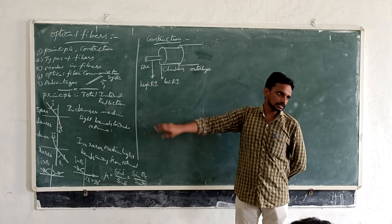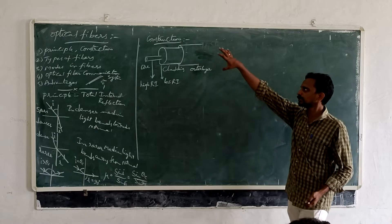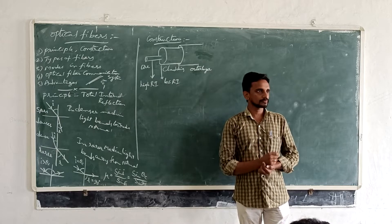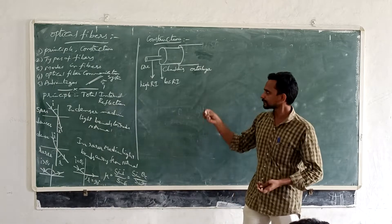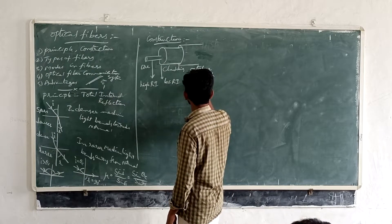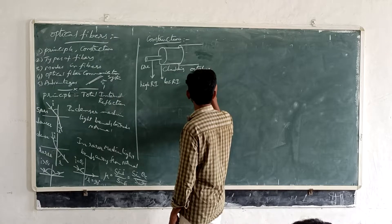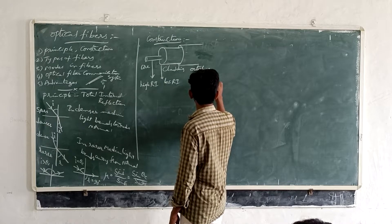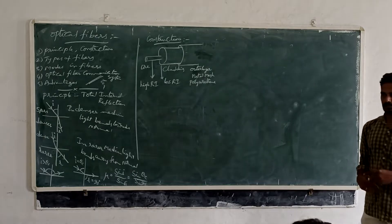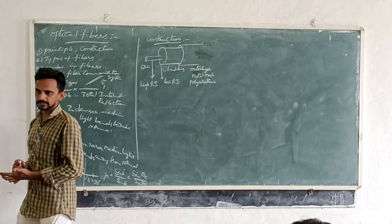We have a high-refractive-index material as the core. Then we have a lower-refractive-index material as cladding. Then we have an outer layer — a metal sheet, a mesh — and a polymer coating.